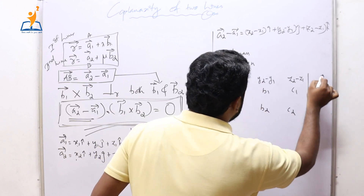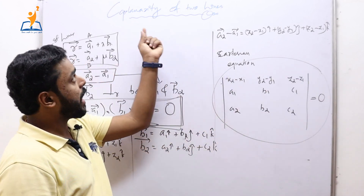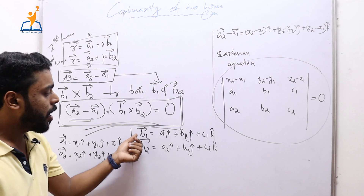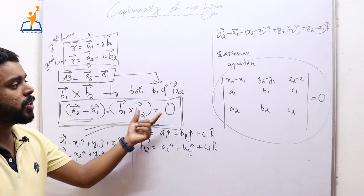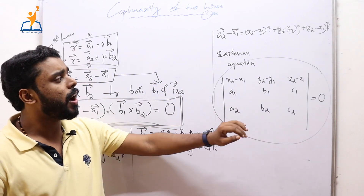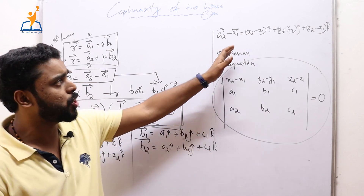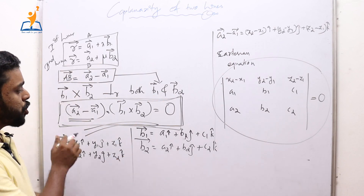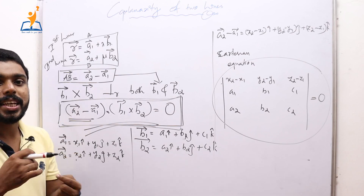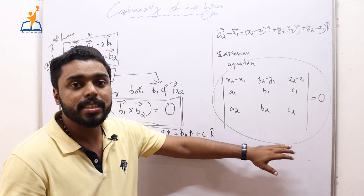This is the Cartesian equation for the condition of coplanarity of two lines. We simply substituted (a2 − a1) and (b1 × b2) into the vector equation. The dot product of these two quantities, when expanded, results in this determinant form. If you have any doubt, substitute a2 − a1 and b1 × b2 into the vector equation and simplify.